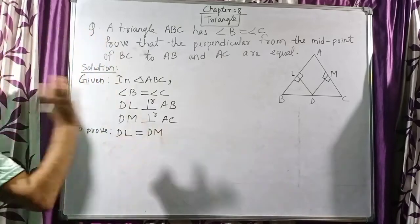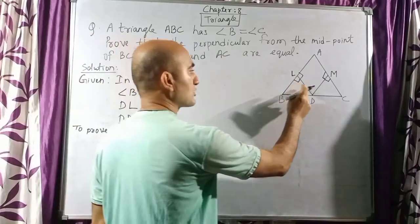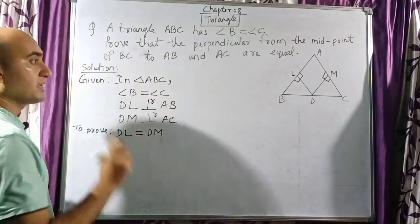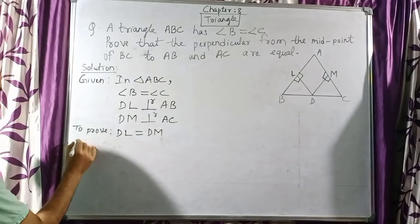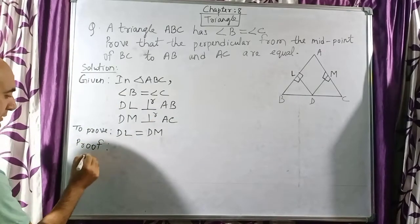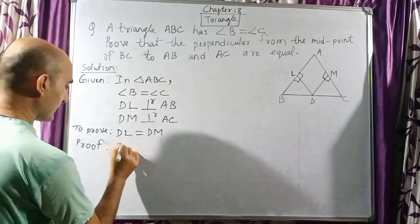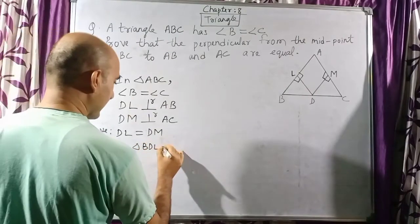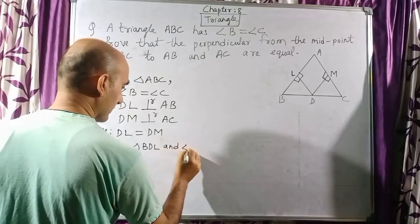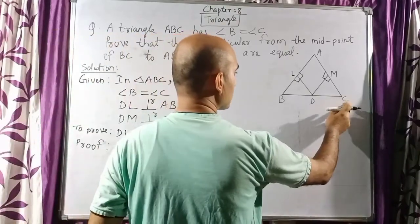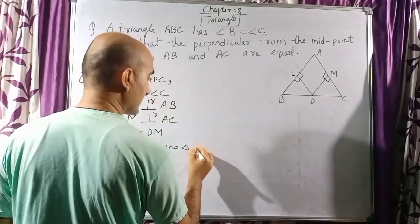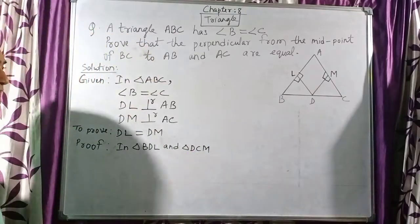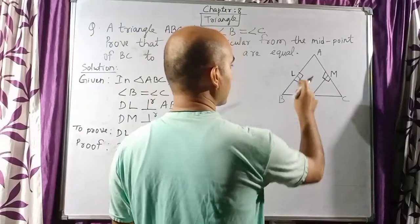To prove DL equals DM, we will consider these two small triangles. In the proof, we look at triangle BDL and triangle DCM.